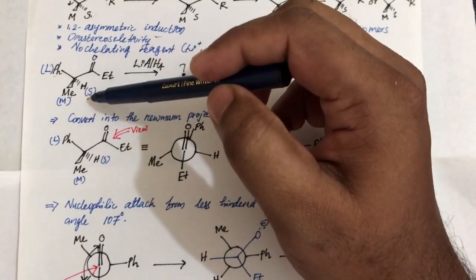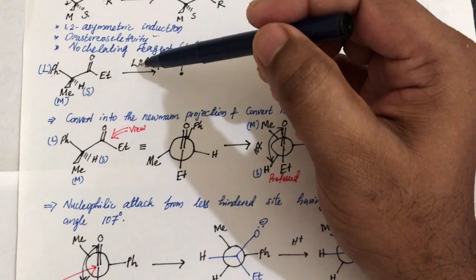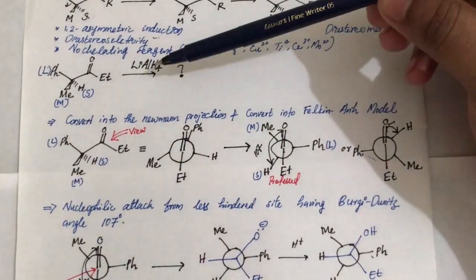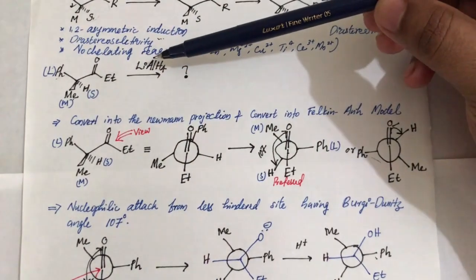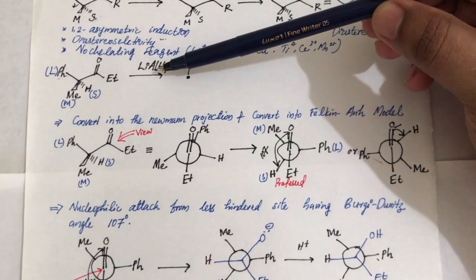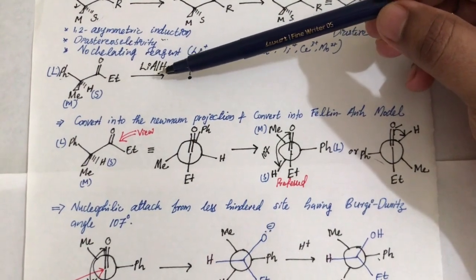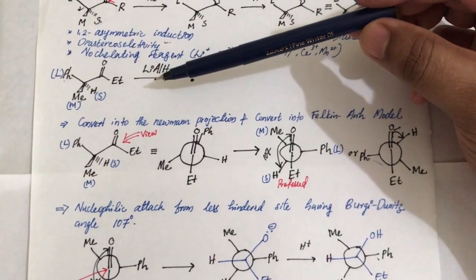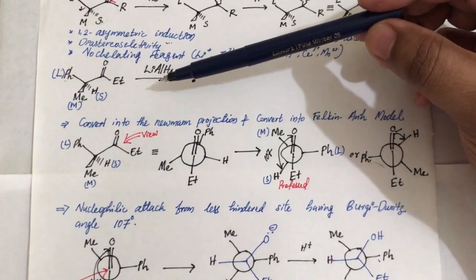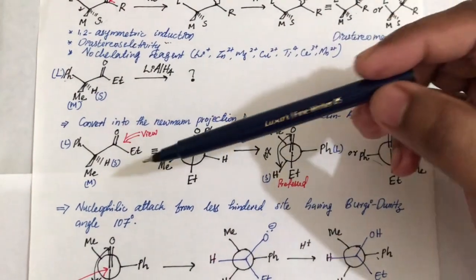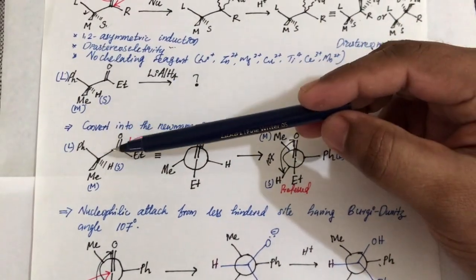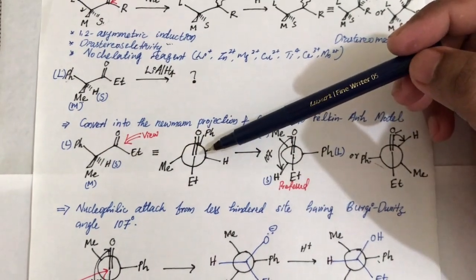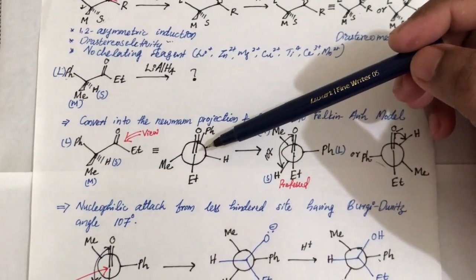We are using lithium aluminum hydride, which is a reducing agent that furnishes H⁻ as the nucleophile. In this model, the first step is converting the given flying wedge structure into a Newman projection — that is very important.